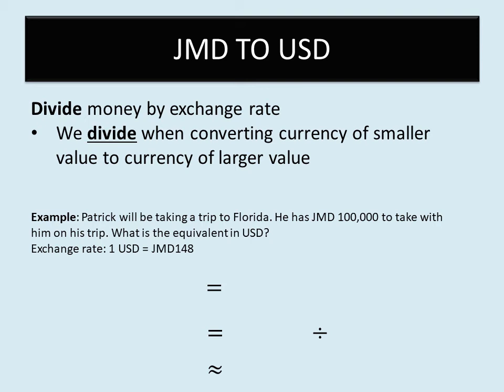When we are converting from Jamaican dollars to U.S. dollars, we are going to divide. We divide because we are converting a currency of a smaller value to a currency of a larger value. The Jamaican dollar is a smaller value and the U.S. dollar is a larger value, so from smaller to larger we divide.